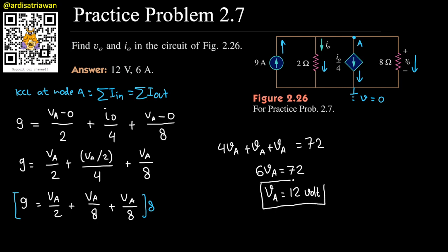So we know that v0, v0 is measured from the ground and it is the same as va. So we can have v0 is equal to va. Therefore, v0 will be 12 volts.